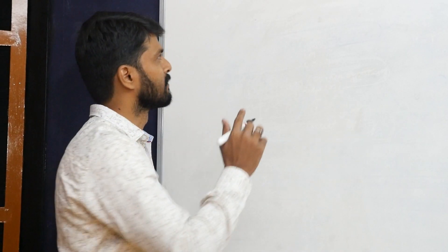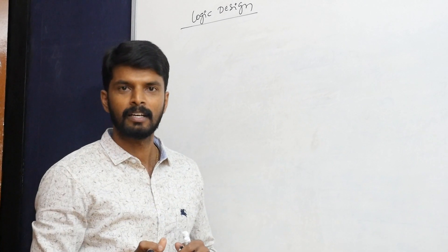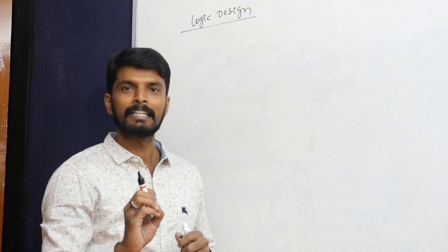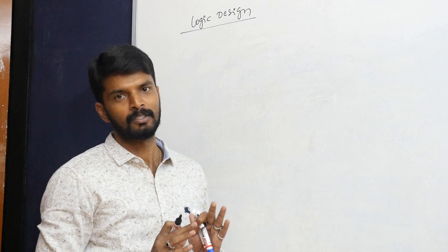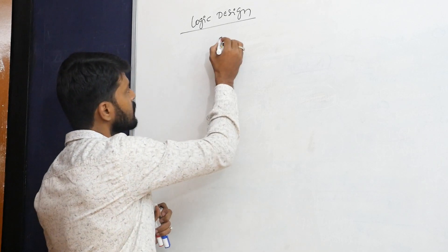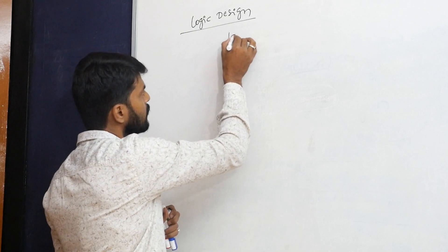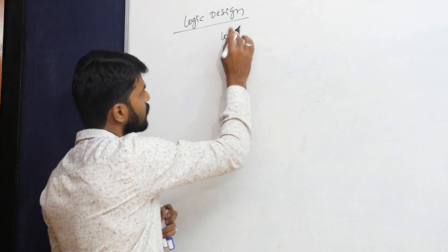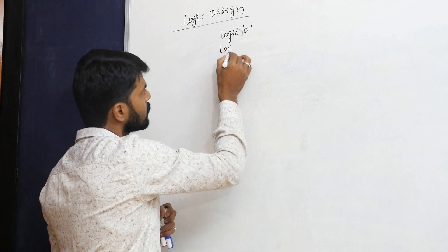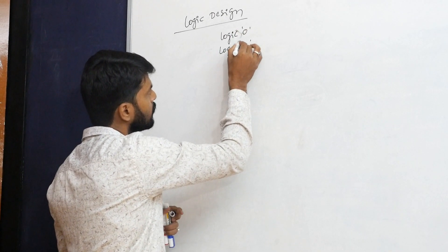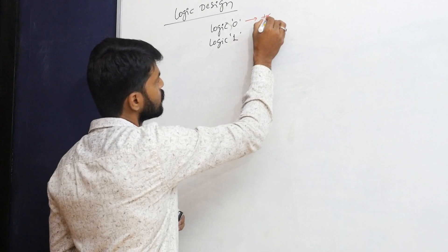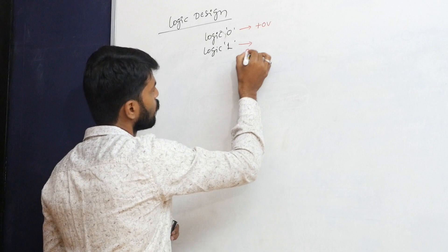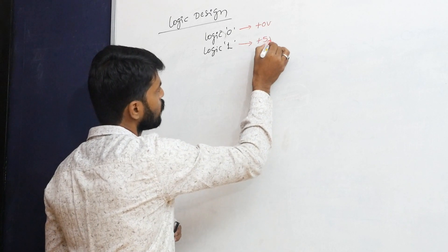We will discuss what is logic design — not just conceptually, but how exactly the circuit operates. Logic design has only two levels: logic zero and logic one. Logic zero is nothing but zero volts, and logic one is nothing but plus five volts.